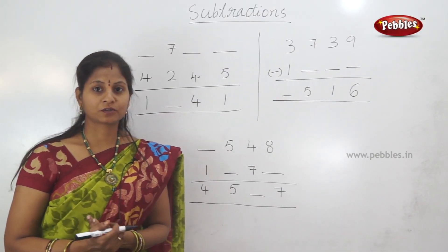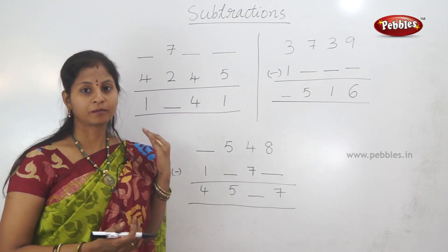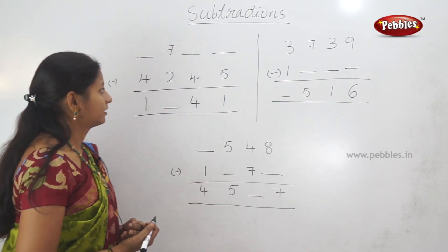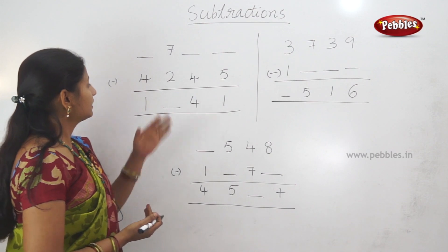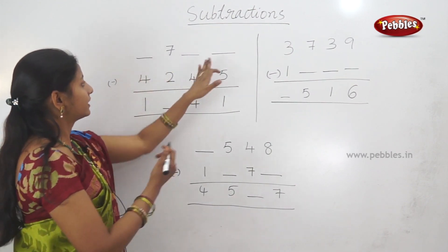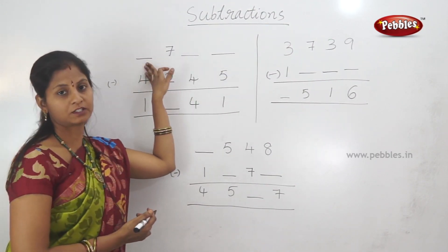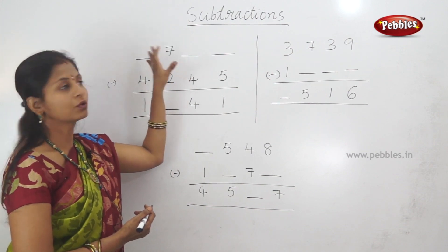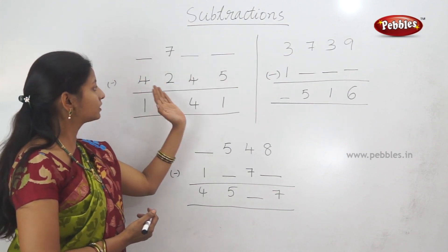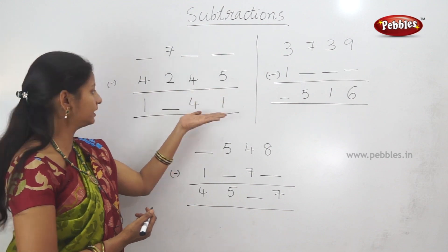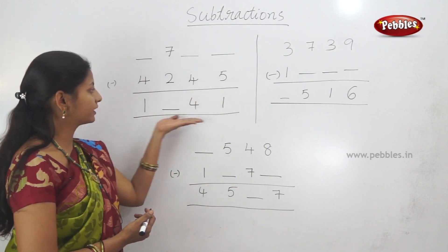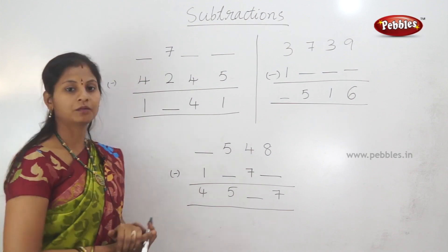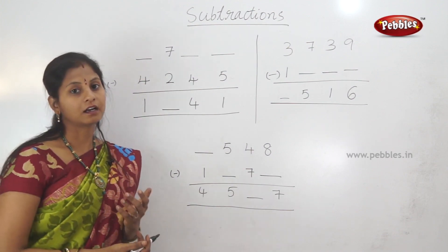If there are some subtractions where some numbers are missed, we will clear the numbers. Here we have no digits in the ones, tens, thousands, hundreds, and 7. We subtract 4,245 and subtract 4,245. So the number is missing.